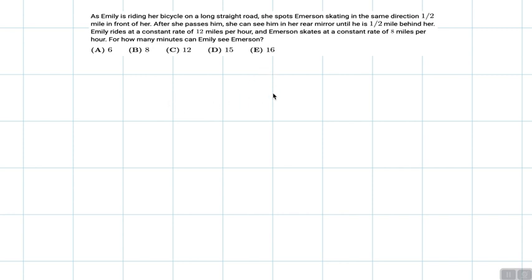So two equations we can use to represent this. Rate times time is equal to distance. So let's call the speed that Emerson is going, his rate is eight miles per hour. We don't know the time, but we'll just call his distance d.